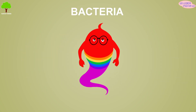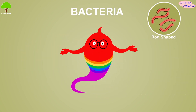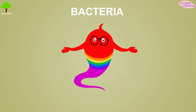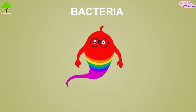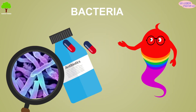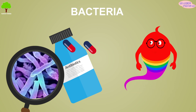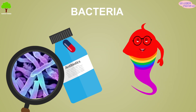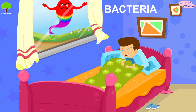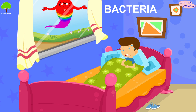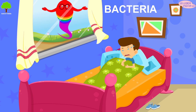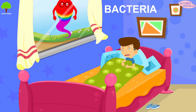Bacteria. They can be rod-shaped, spherical, or spiral-shaped. Some bacteria can be useful. For example, streptomyces is used in making antibiotics, but some nasty kinds like staphylococcus can give you a bad tummy ache or a sore throat.